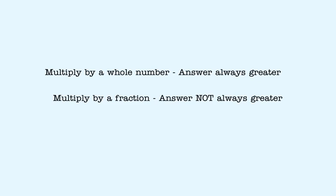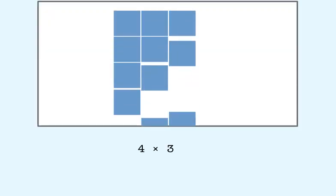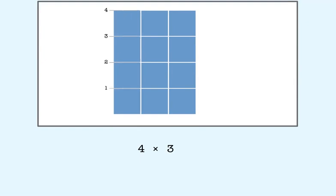Let's look first at an illustration of multiplying by a whole number. Here, we multiply 4 by 3. The answer is 12, which is represented by all the blocks in the array. 12 is greater than 4, so the answer was greater than the number you started with.